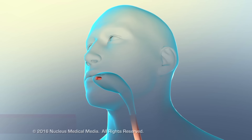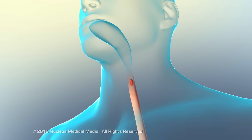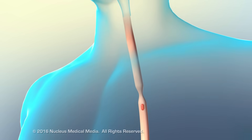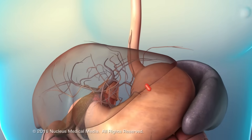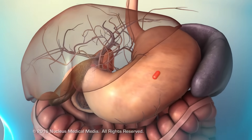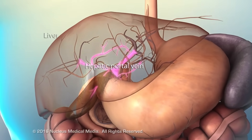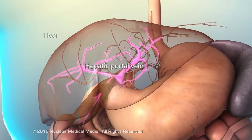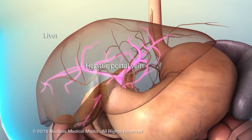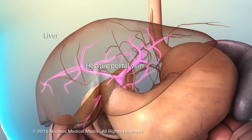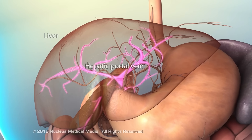If taken orally, drugs must pass through the cells of the gastrointestinal tract. Drugs cross through cells of the GI tract and travel to the liver via the hepatic portal vein. The liver has a chance to metabolize some of the drug before it goes into general circulation. This is called the first-pass effect.